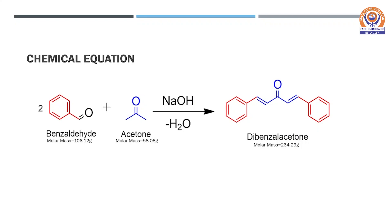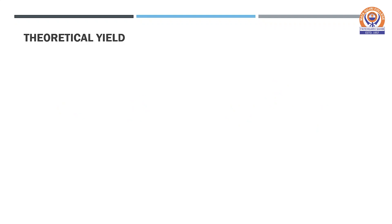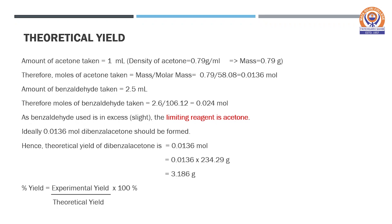Let us see how we can calculate the theoretical yield for this reaction. The amount of acetone taken is 1 ml, which can be converted into grams using its density of 0.79 g/ml, giving a mass of 0.79 grams. This mass is then converted into moles by dividing by the molar mass of 58.08, giving 0.0136 moles of acetone.